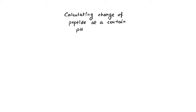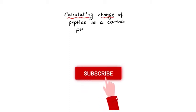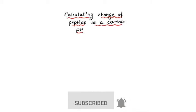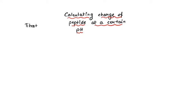Hello everyone and welcome to another video. In this one we're going to talk about how we can calculate the charge of a peptide at a certain pH — how the overall charge is changing when we subject a peptide to a certain pH. I've already done a video on the titration curve of an amino acid; if you haven't watched it please do, it will be linked in the description. There you'll get the concept of pKa and how charge changes on a particular amino acid with increasing pH.